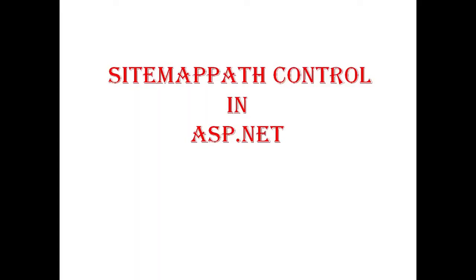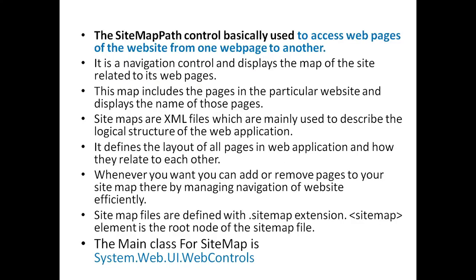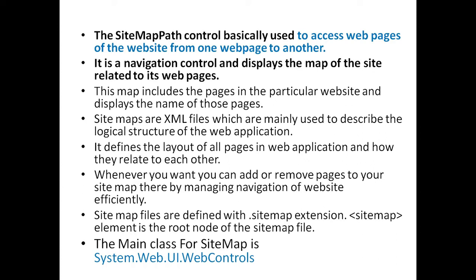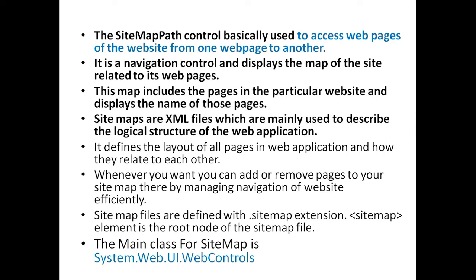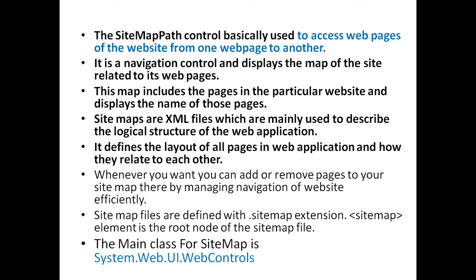Here we will see SiteMapPath control in ASP.NET. The SiteMapPath control is basically used to access the web pages of a website from one page to another. It is a navigation control and displays the map of the site related to its web pages, including the names of those pages. Sitemaps are XML files which are mainly used to describe the logical structure of the web application, defining the layout of all pages and how they are related to each other.